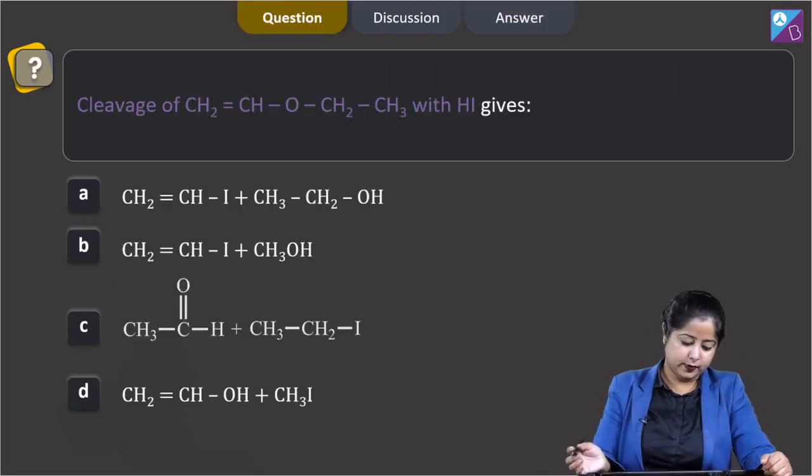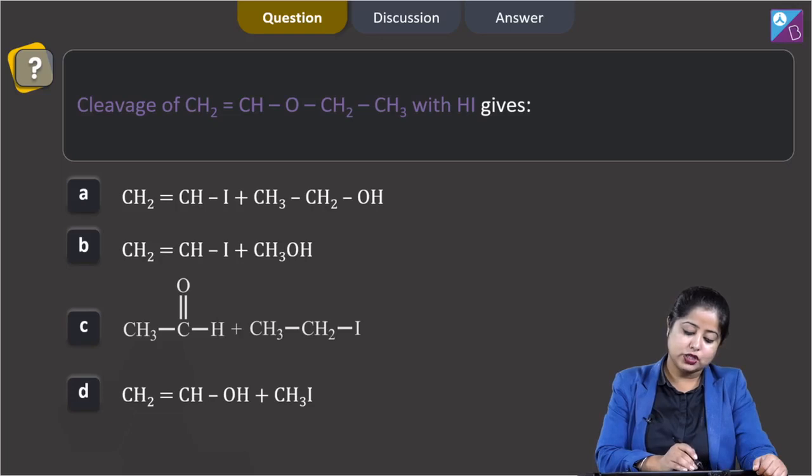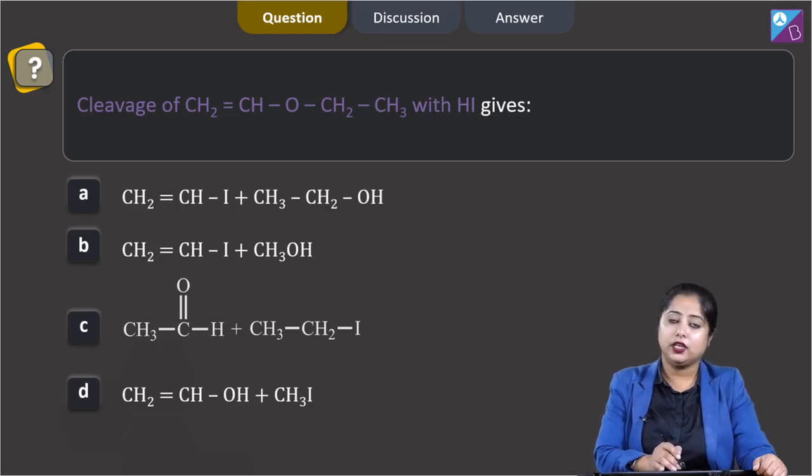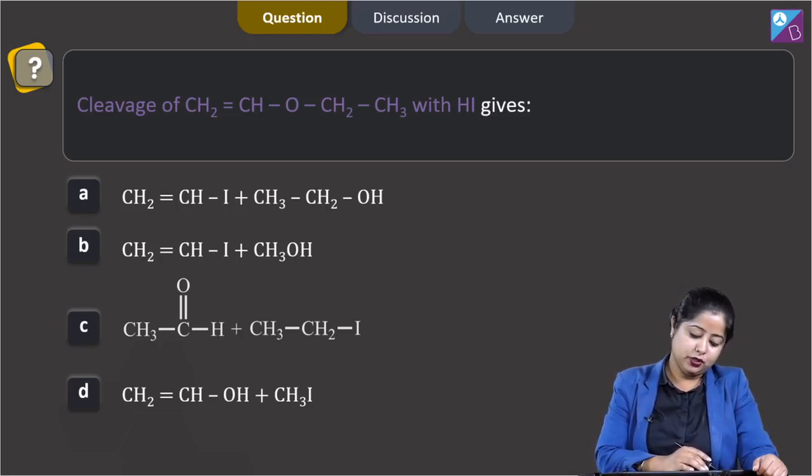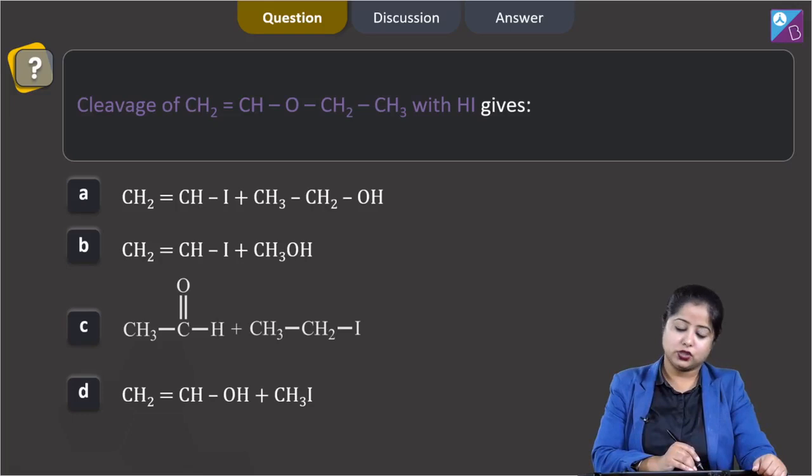Moving to the next question. Cleavage of CH2=CH-O-CH2-CH3 with HI gives CH2=CHI plus CH3CH2OH, CH2=CHI plus CH3OH, CH3C=O plus CH3CH2I, or CH2=CHOH plus CH3I.